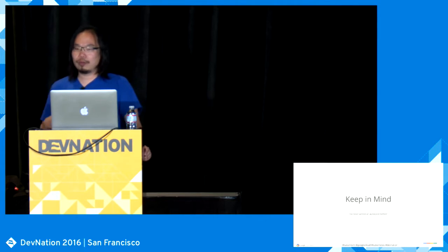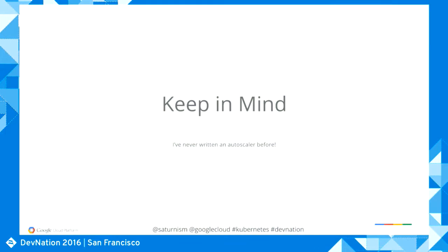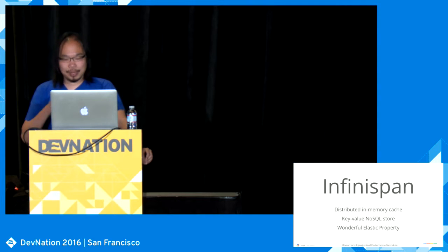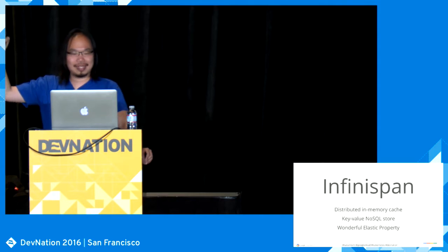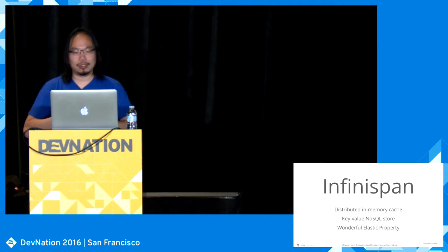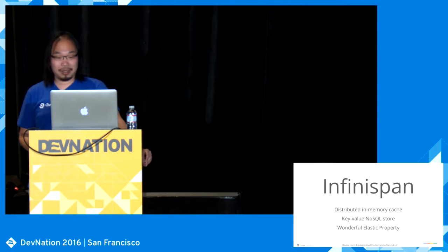When I started figuring out how to write this autoscaler, it was the very first time I had done this. I had never written an autoscaler before. The thing we're going to autoscale is an in-memory cache. During my time at Red Hat many years ago, I did a lot of work around in-memory caching and Infinispan. How many people here have heard about Infinispan? It's a distributed in-memory cache — you can also store data in a persistent store. It's basically a key-value, NoSQL store.